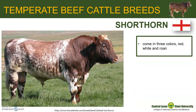Beef Shorthorn is a temperate breed that originated in England. Shorthorn comes in three colors: red, white, and roan. Solid red Shorthorn are often used to help maintain solid colors in crosses, while white and roans can be used on black cattle to get both blues and blacks.